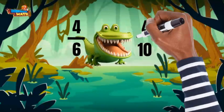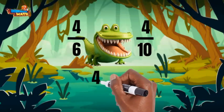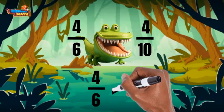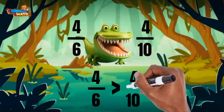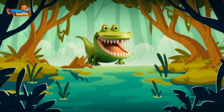Here's some more: four-sixths and four-tenths. These fractions have the same numerators too, so the smaller denominator will be the greater fraction. Four-sixths is greater than four-tenths. Yummo, that was a tasty one!